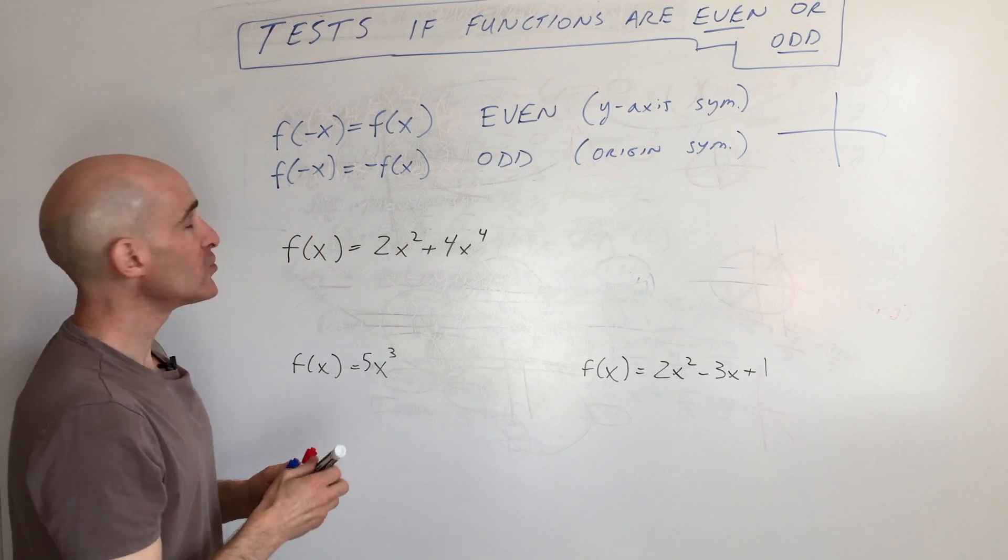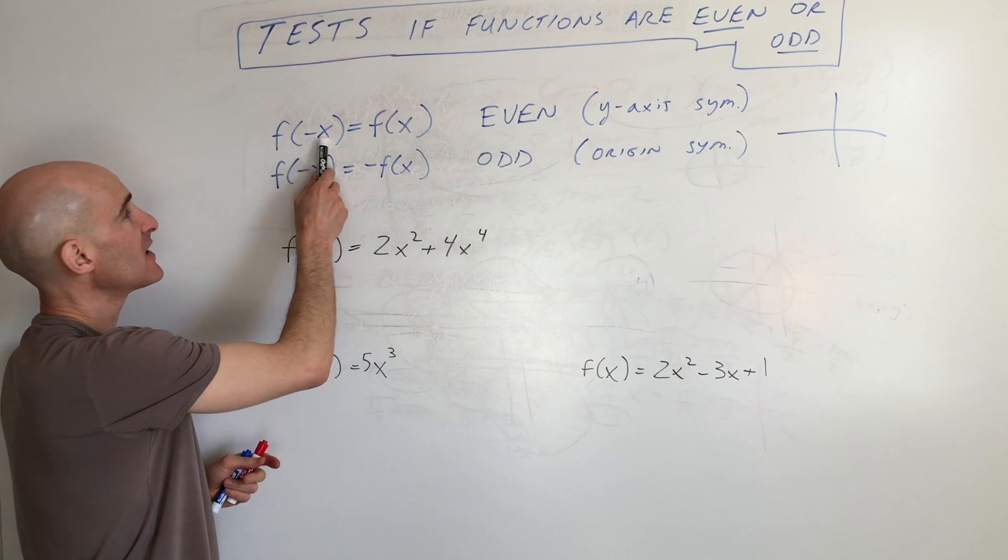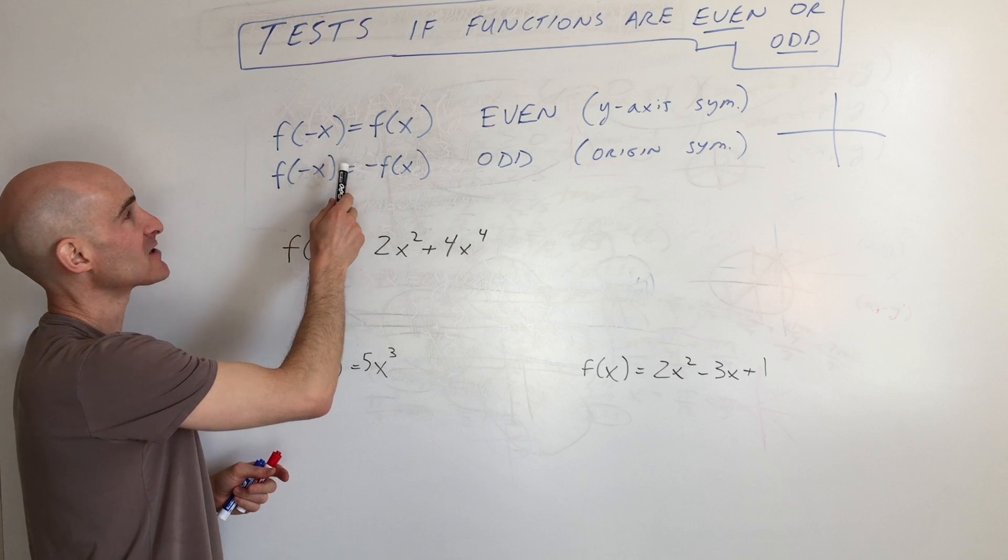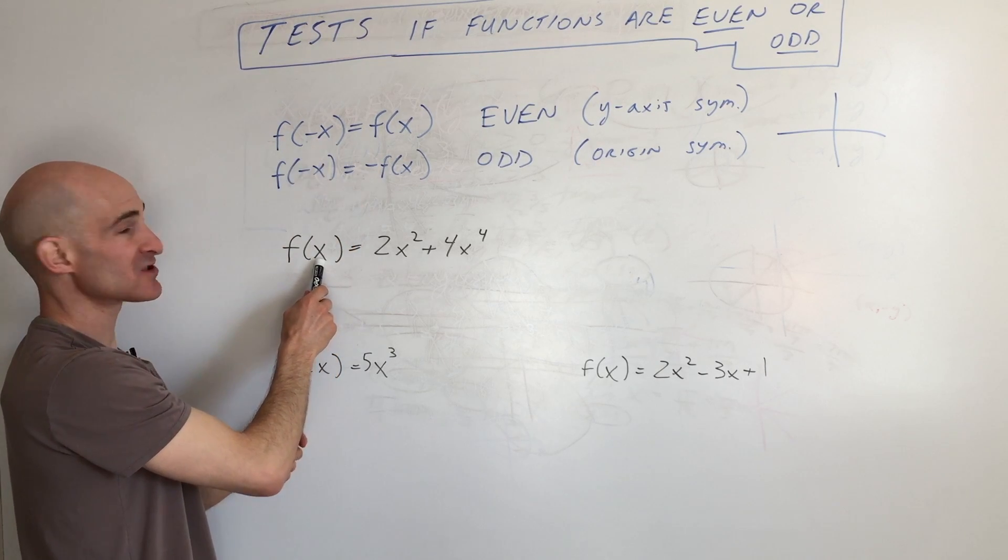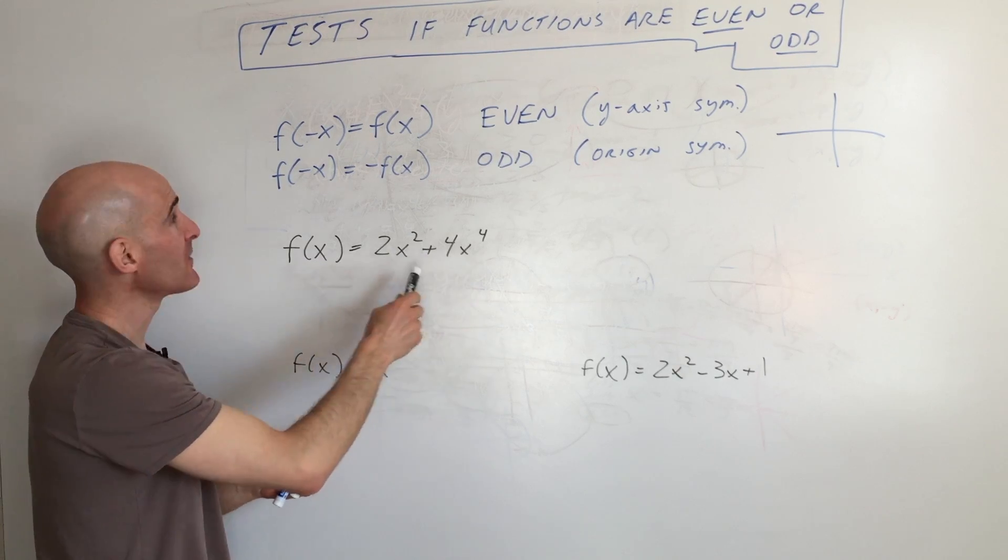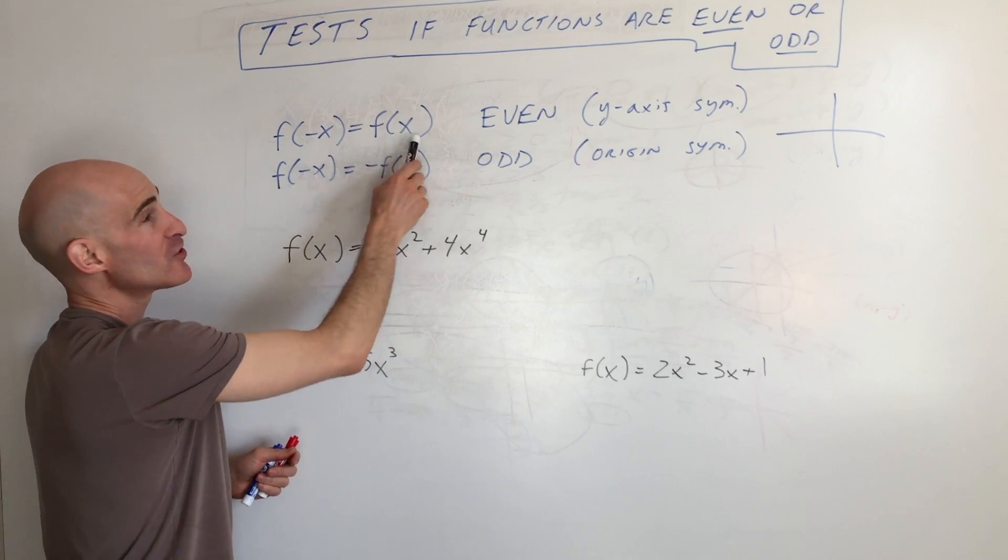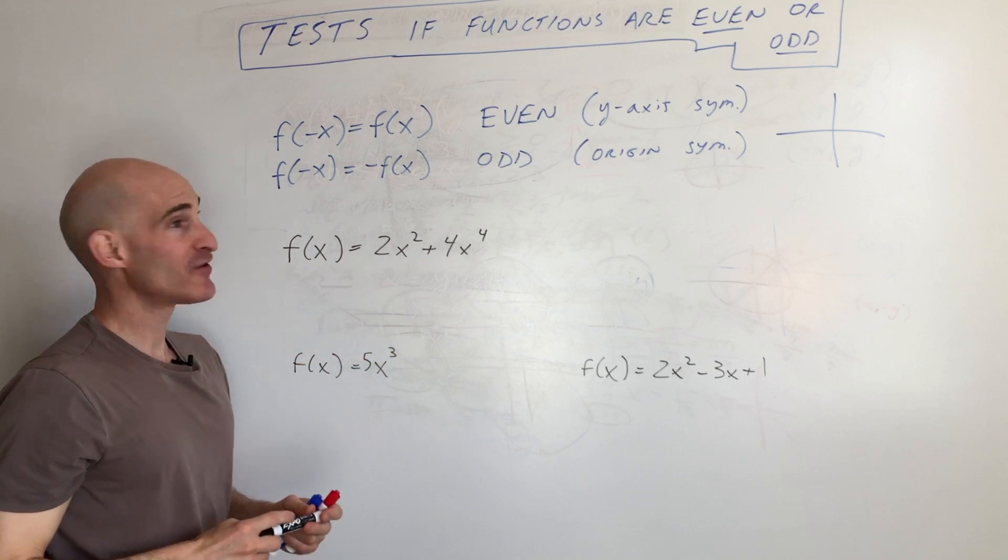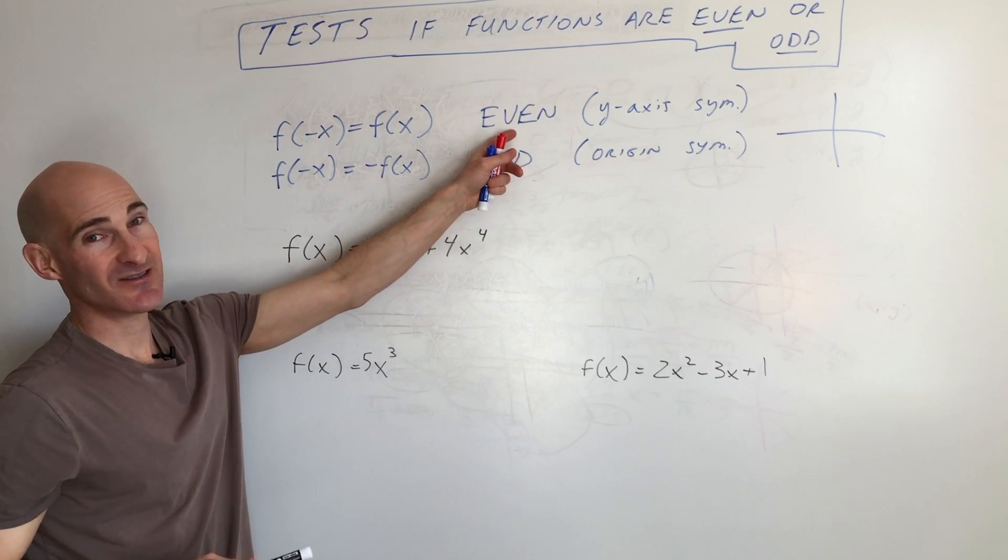But what you do, the tests are a little bit different. So the tests here, you're replacing x with negative x in your function. So whatever's in the parentheses, negative x, you're going to put that in place of x on the right. If you get back the original function, exactly like how the original function is, that tells you that it's even.